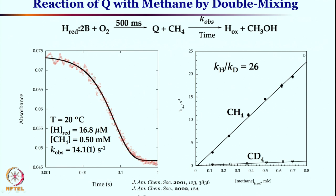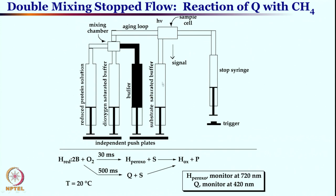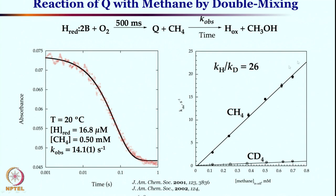We take many different concentrations of methane and study them independently. One study is done at one concentration, then we vary the concentration and repeat — multiple studies are done while keeping everything else constant and only changing methane concentration, mixing the Q intermediate after 500 milliseconds with the methane substrate. This allows us to generate the linear plot, and replacing methane with CD₄ gives a separate plot. The CH₄/CD₄ comparison yields a KH/KD value of 26.